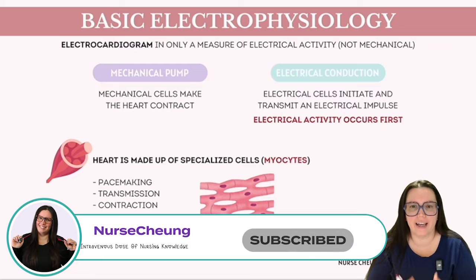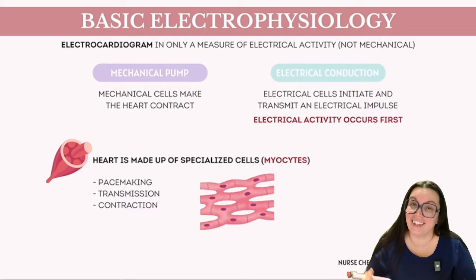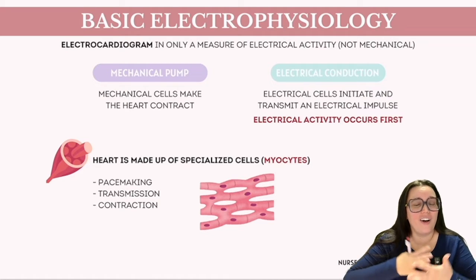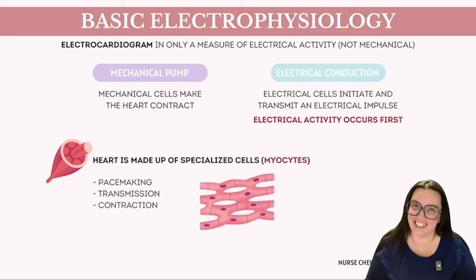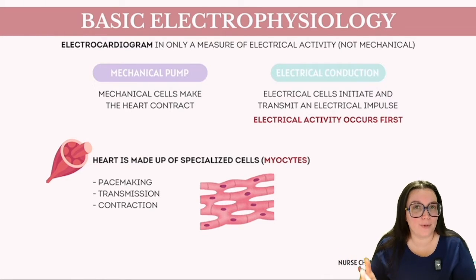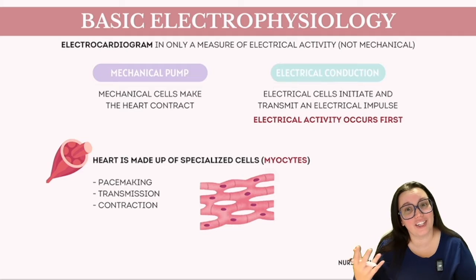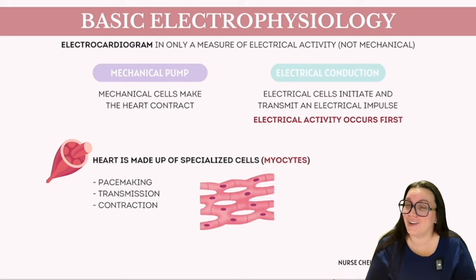When discussing the coronary blood supply, it's crucial to recognize that our heart functions not just as a mechanical pump but also relies on a vital supply of oxygen and electrolytes. Beyond these essentials, the heart's operation is fundamentally driven by its electrical conduction system, which is the cornerstone of initiating heart contractions — serving as the spark that activates the pump's mechanical functions.